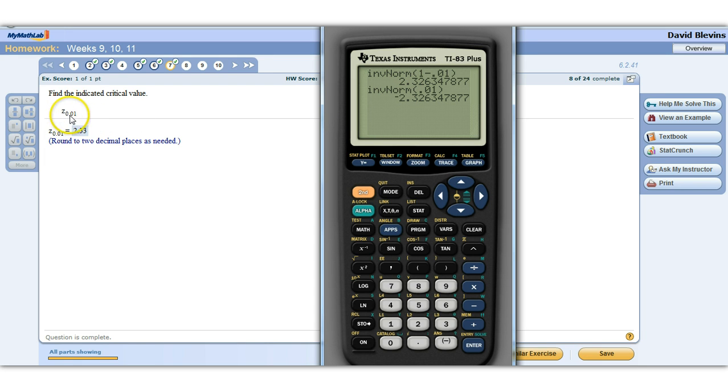But z alpha, or z with this number below it, is area to the right. So technically, to get it correct, you either need to remember to take the absolute value of these numbers, making sure you take the positive version, or just remember to make that adjustment. It gives us area to the right. Inverse normal takes an area to the left. So we've got to make this adjustment.